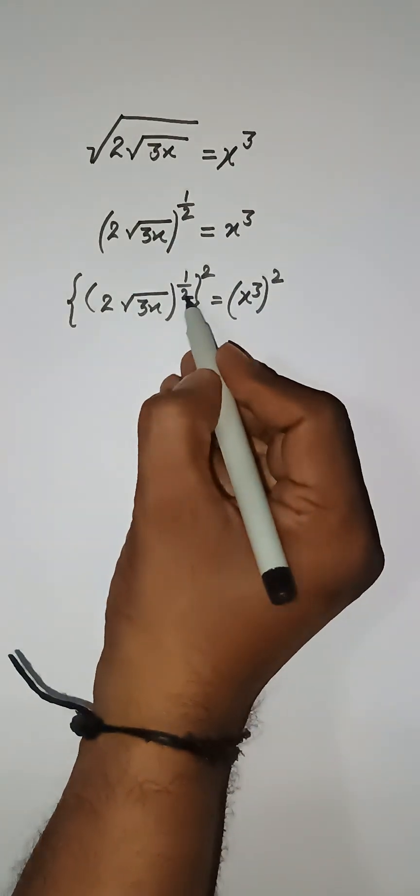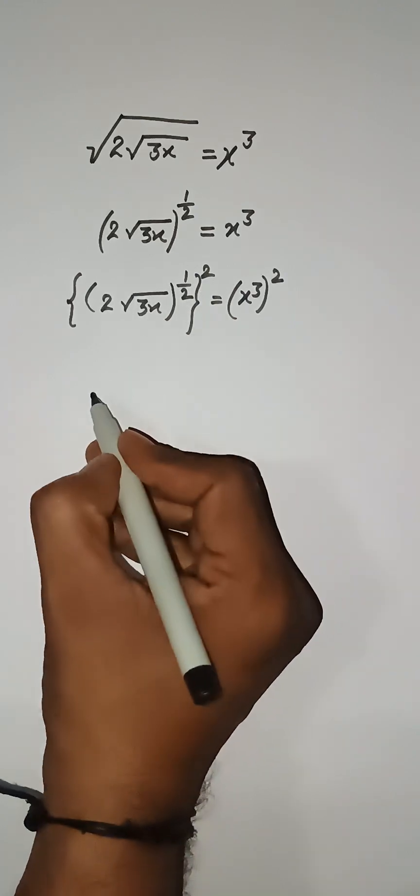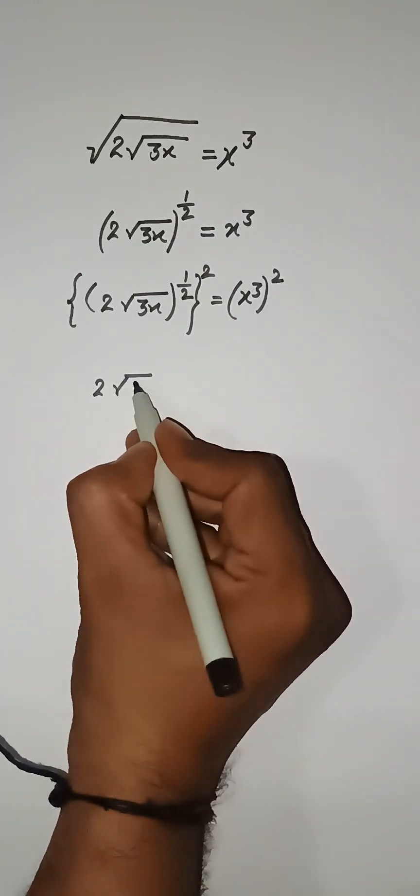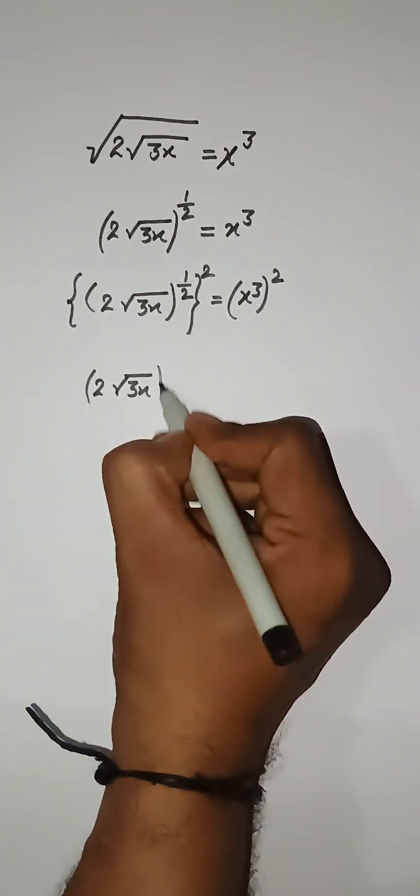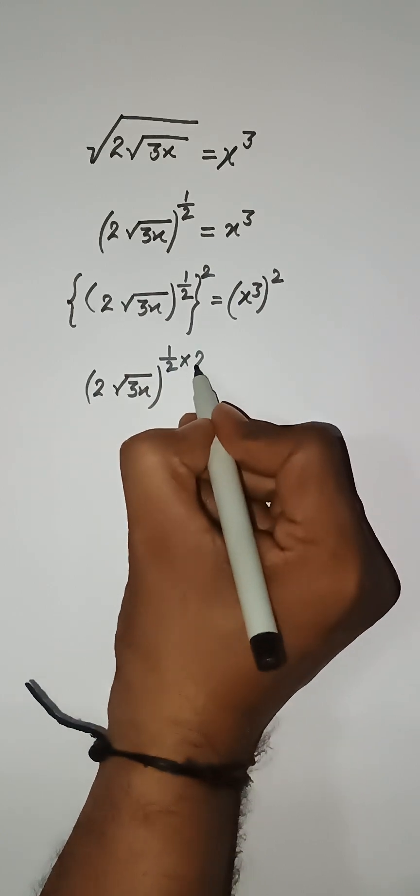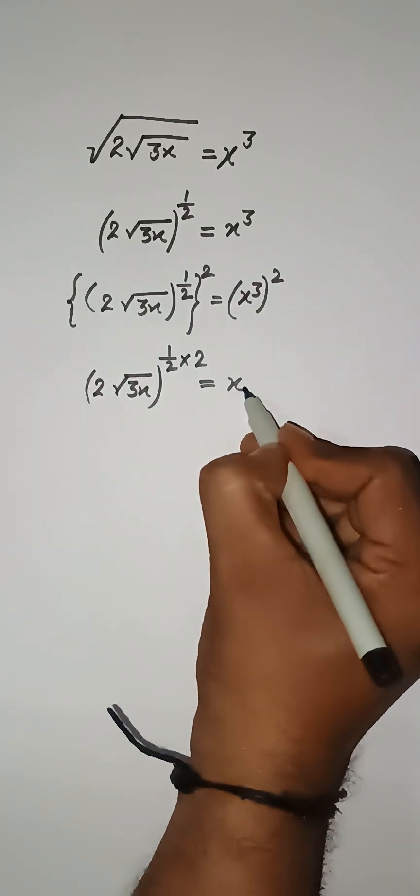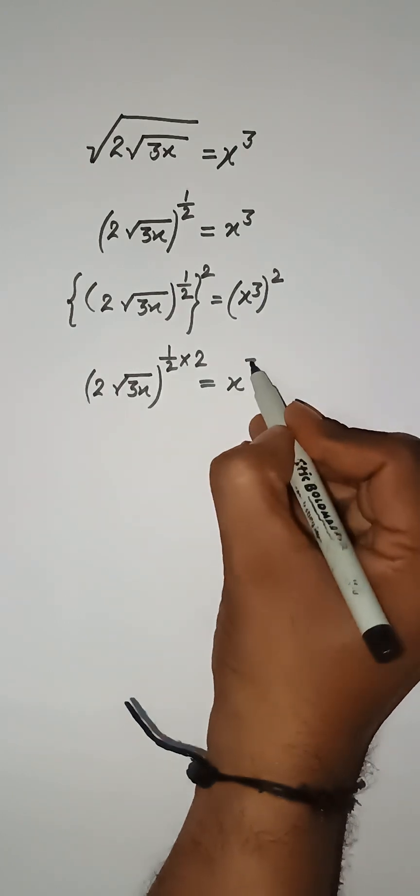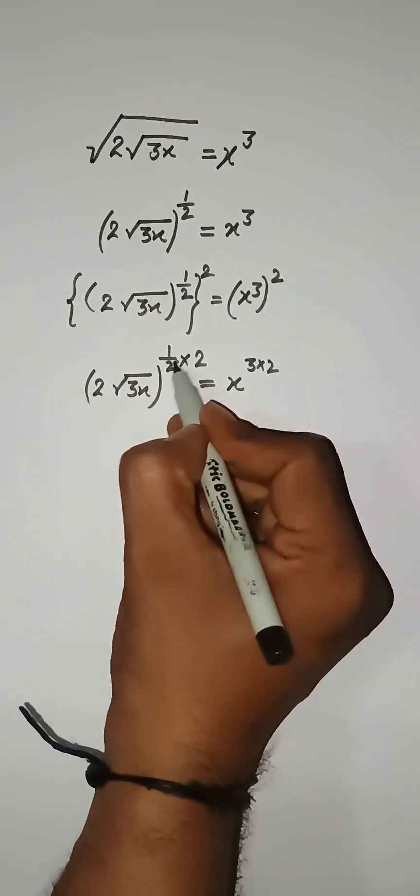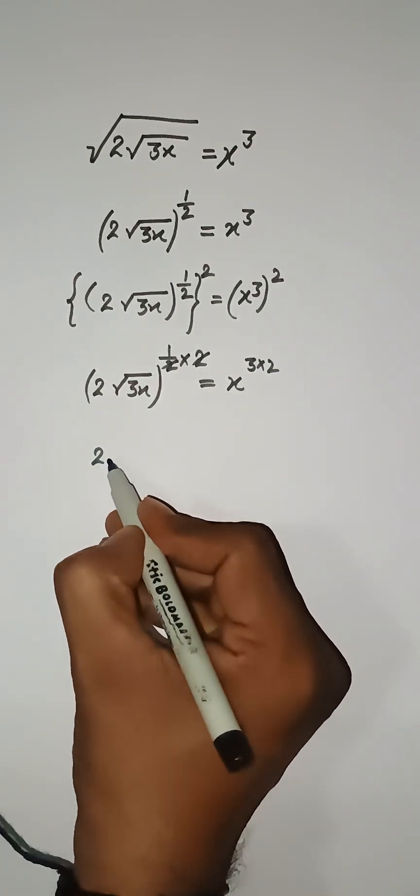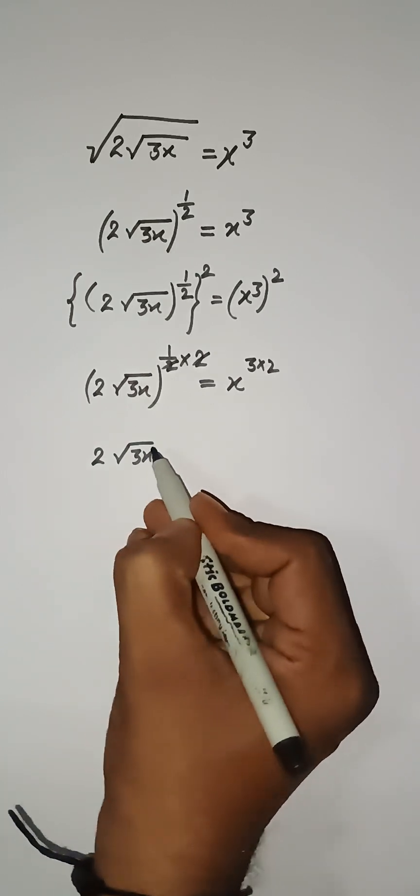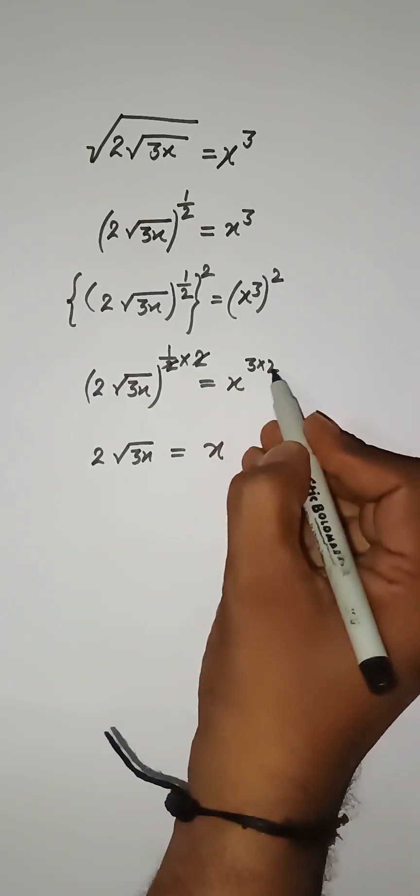Now this power 1/2 and 2 will multiply together. So we have 2 cube root of x, and then 1/2 multiply 2, here we have x³ multiply 2, then this 2 will cancel, we have 2 cube root of x that is equal to x⁶.